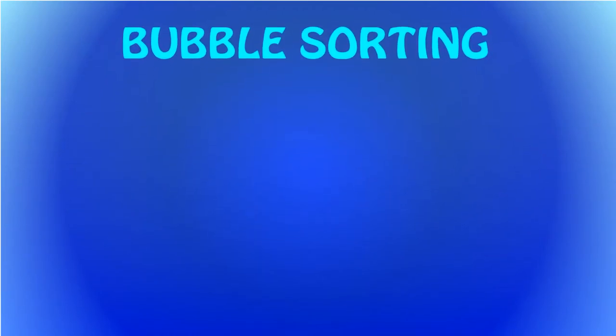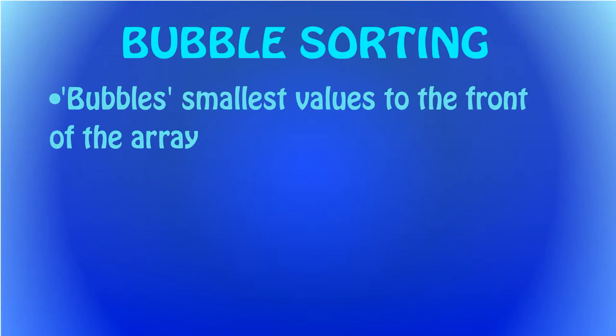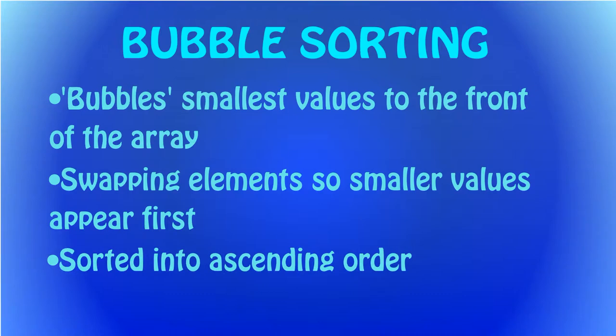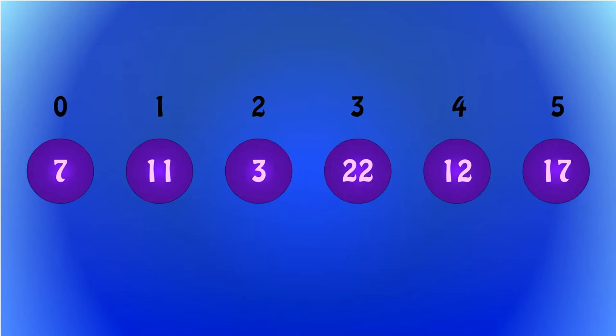During a bubble sort, the CPU bubbles the smallest values to the beginning of the array through swapping. For each pass made by the CPU, elements are swapped so that the smaller value appears first. By the end of the sort, the elements in the array are sorted into ascending order. Here are the numbers unsorted in the array.